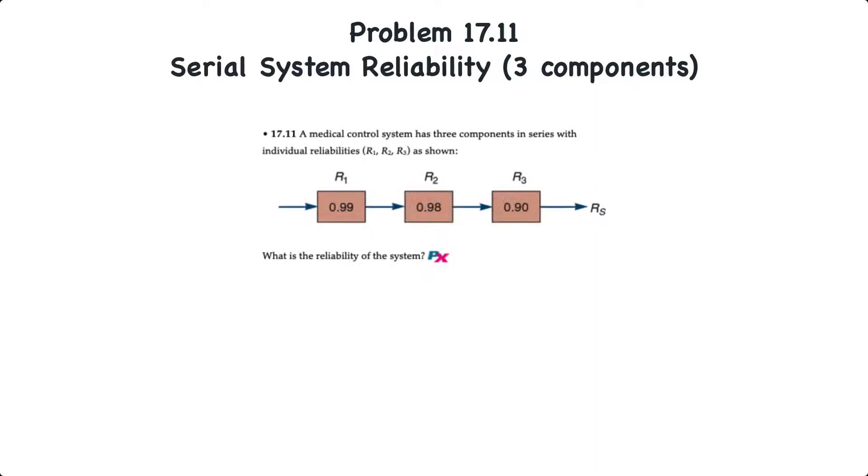Let's actually start with problem 17.11. Here we have a medical control system with three components in series with individual reliabilities R1, R2, and R3 as shown. R1 has a reliability of 0.99 or 99%, R2 98%, and R3 a reliability of 90%. What's the overall reliability of the entire system?